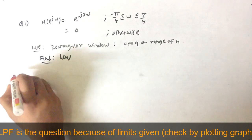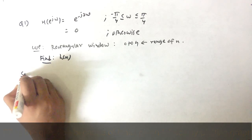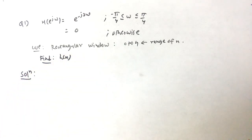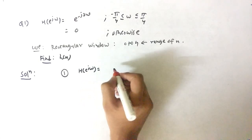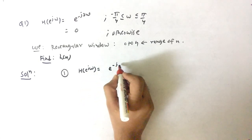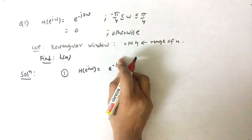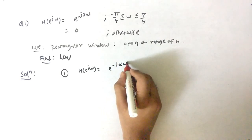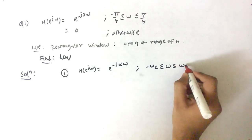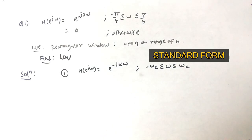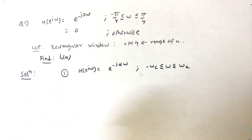To solve this, you should first know that H(e^jω) is in the form e^(−jαω), and the cutoff range is from −ωc to ωc. You can see the question is exactly in that form.